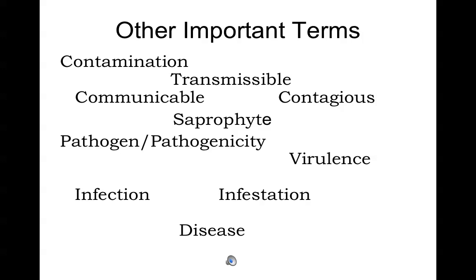A disease-causing microorganism is a pathogen, and we can modify that term into pathogenicity. Virulence refers to the severity of symptoms. Infection is the growth of a microorganism. Infestation is the growth and appearance of insects or worms. Disease simply means 'not at ease.' All of these are very common terms used routinely, especially in healthcare, but for our class we need more specific definitions.